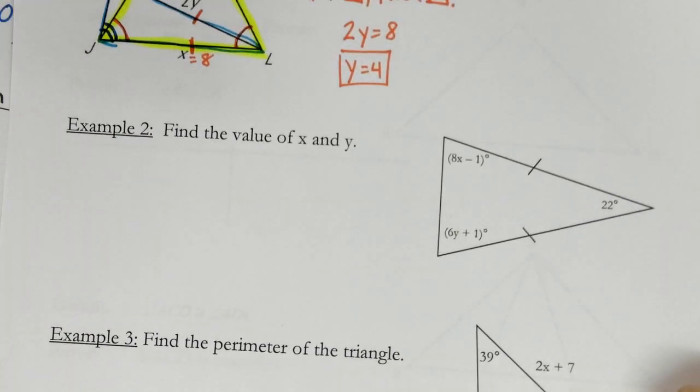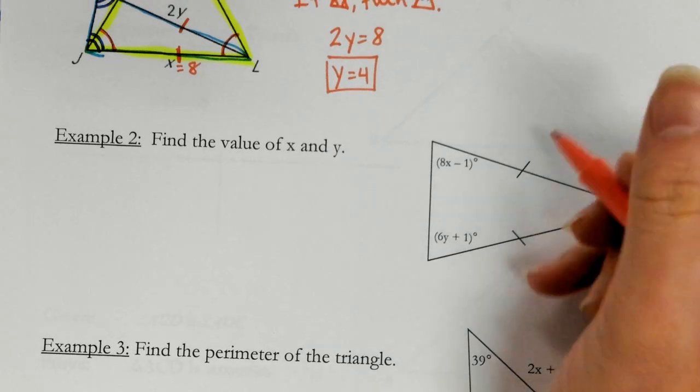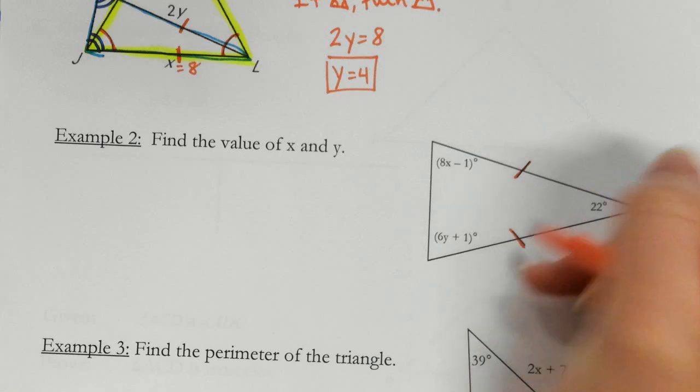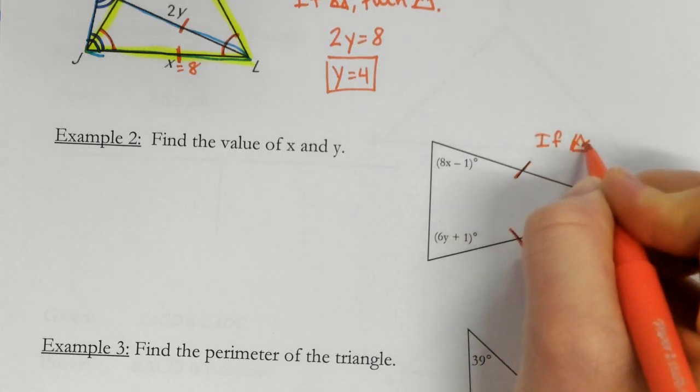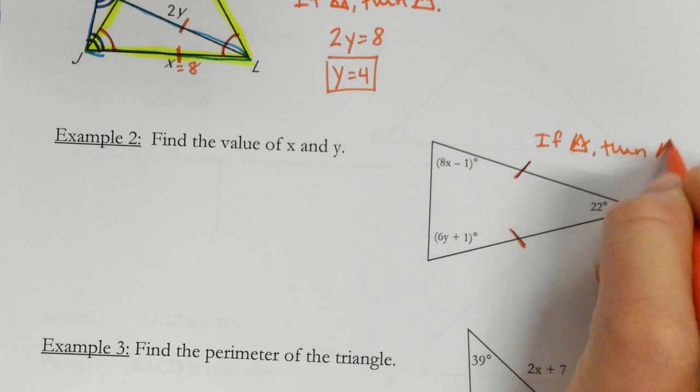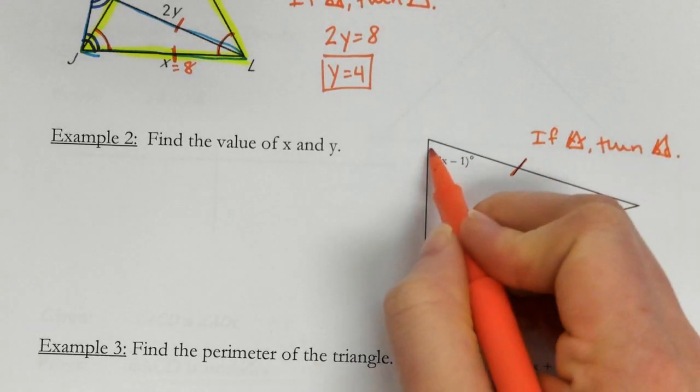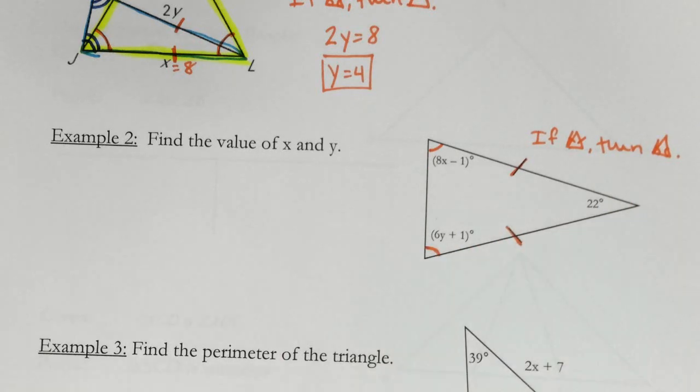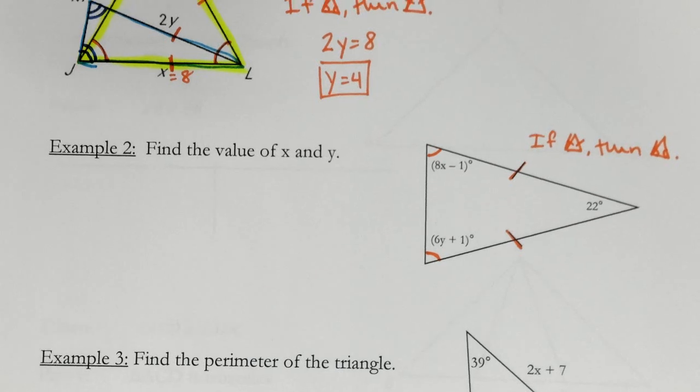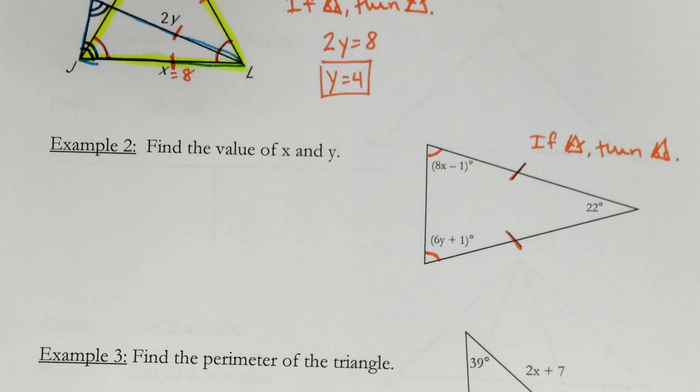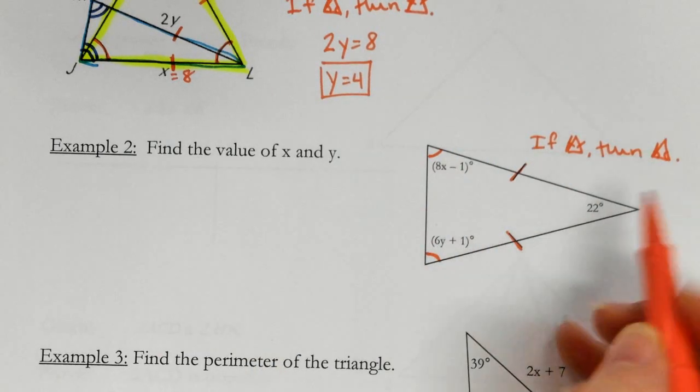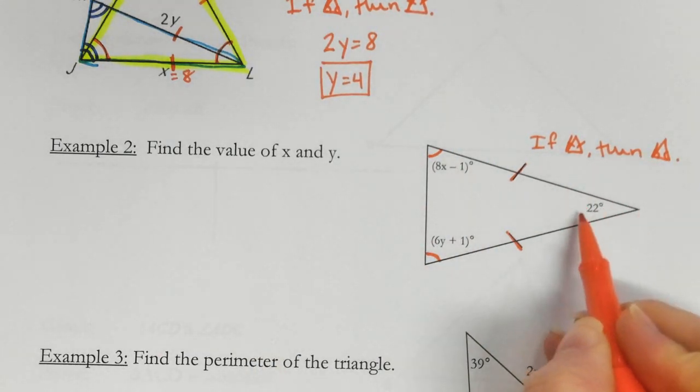Alright, find the values of x and y. So this one is one of the trickier ones that we'll see. So I see two sides are congruent, so that means two angles are congruent. And the two angles are those two. Well, if you see one has an x, one has a y, so I can't put them in the same equation because that doesn't help us. I can't say x equals y. I can't solve for any of them.